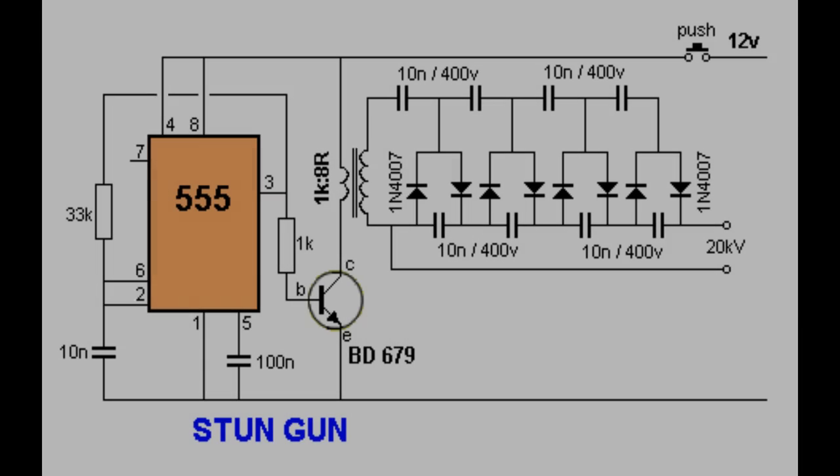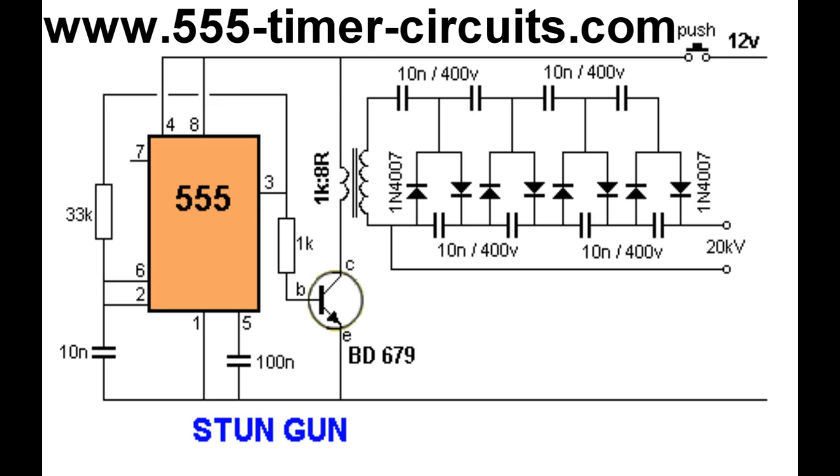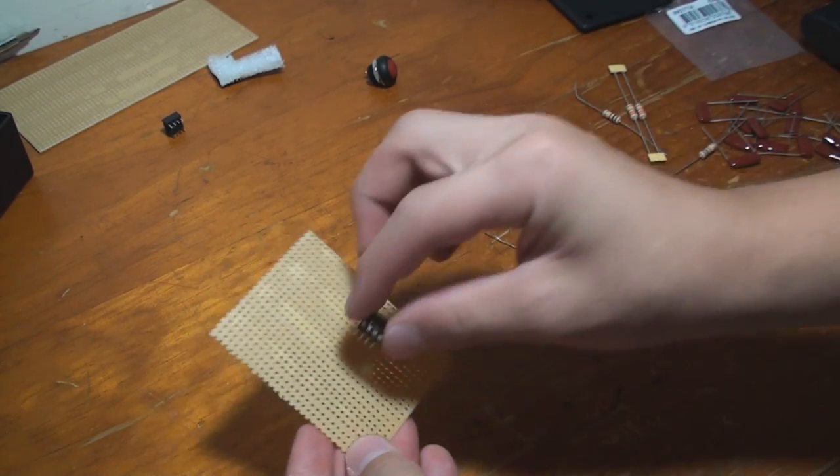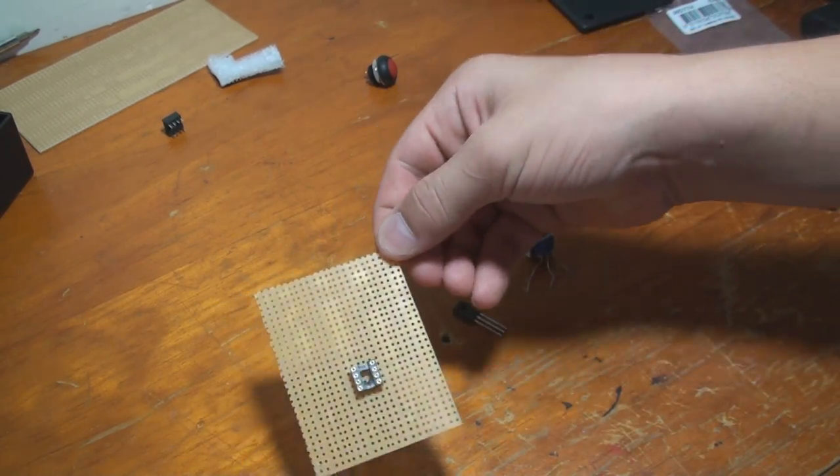Here's the circuit diagram kindly provided by 555timerscircuits.com. The first thing you're going to do is get your perforated board and place the 555 timer somewhere in the middle.